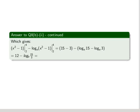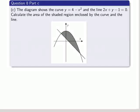Is the same as log e of 15 over 3. So what we get there is in actual fact 12 minus log e of 5, that's 12 minus 1.609, and we get 10.391 as the answer.